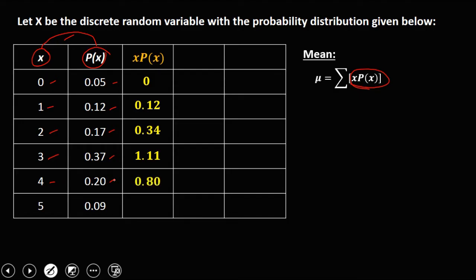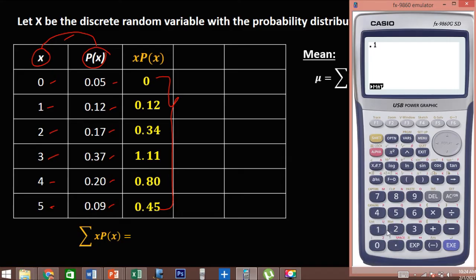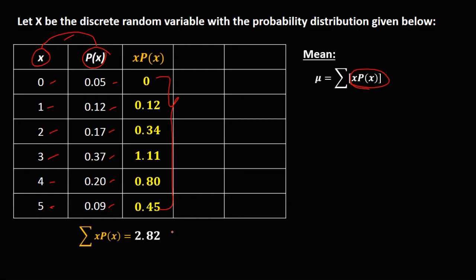And 5 times 0.09, that's 0.45. Then to solve for the summation of x times P(x), just add all these numbers: 0.12 plus 0.34 plus 1.11 plus 0.80 plus 0.45. Therefore, the summation of x times P(x) is 2.82, and since that equals the mean, the mean is 2.82.